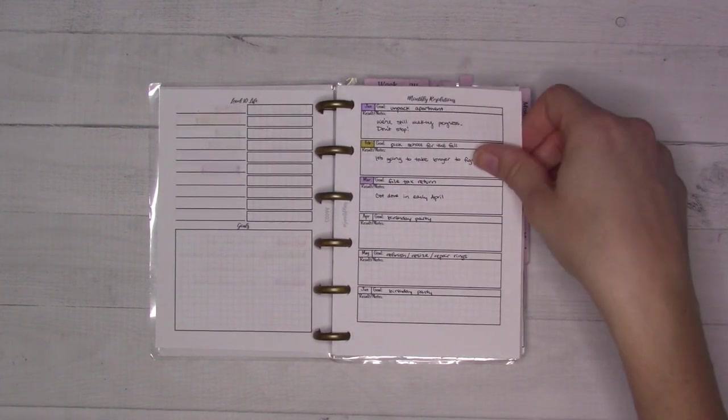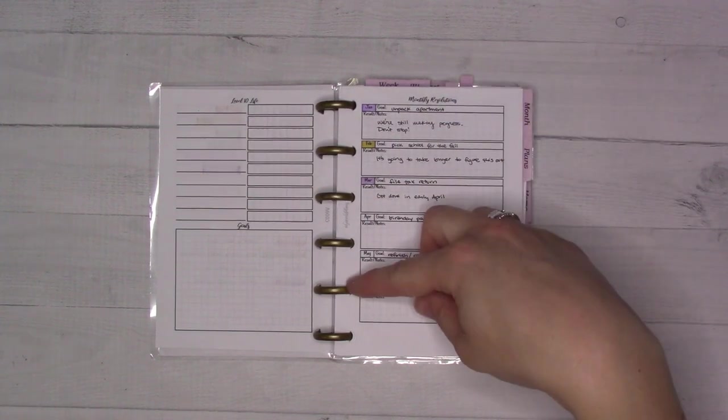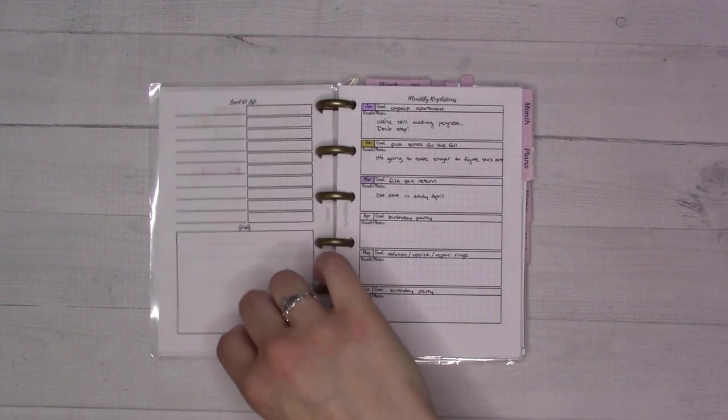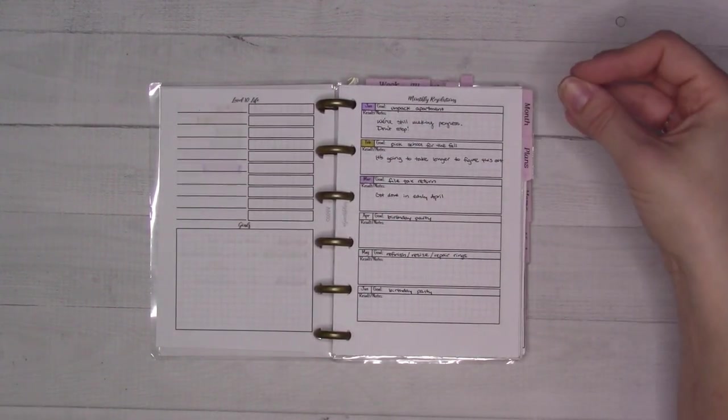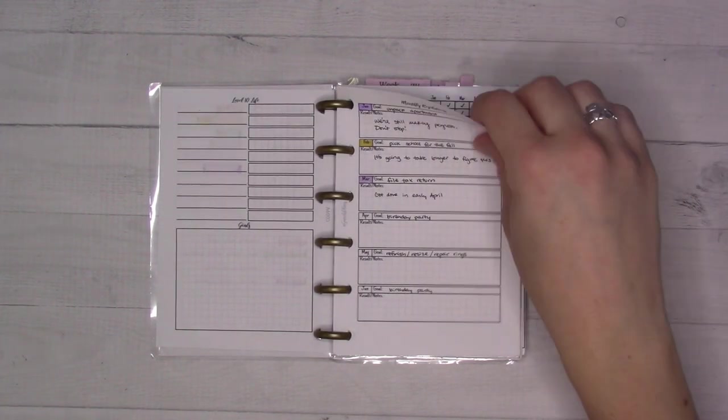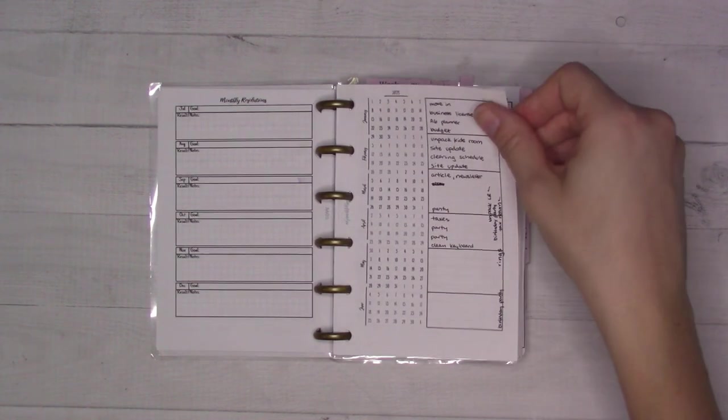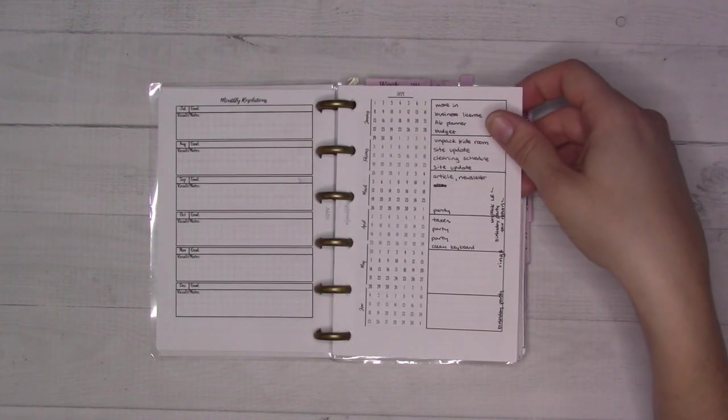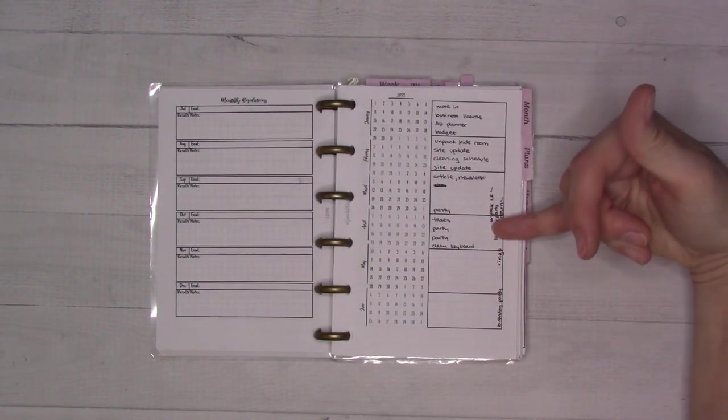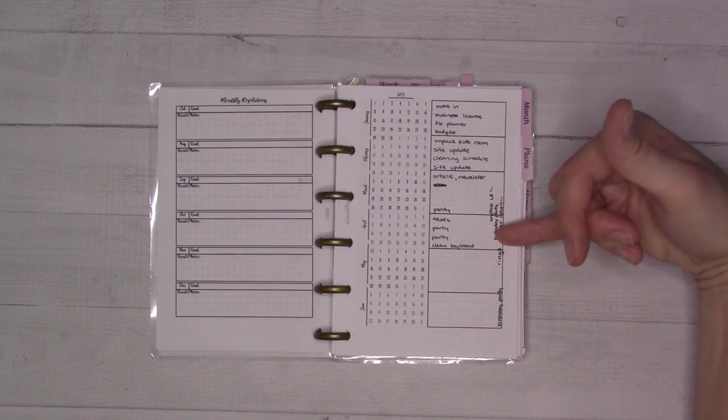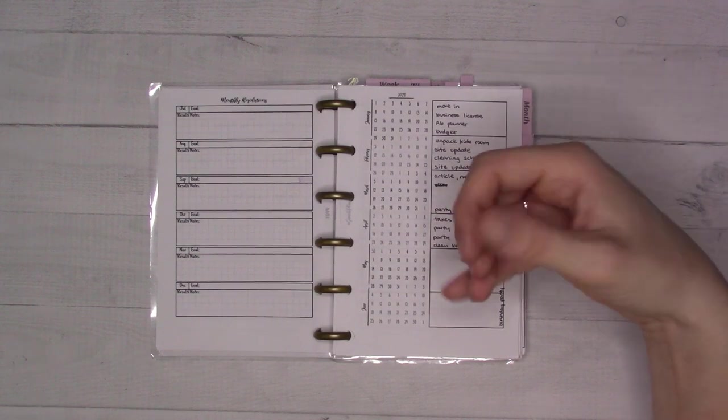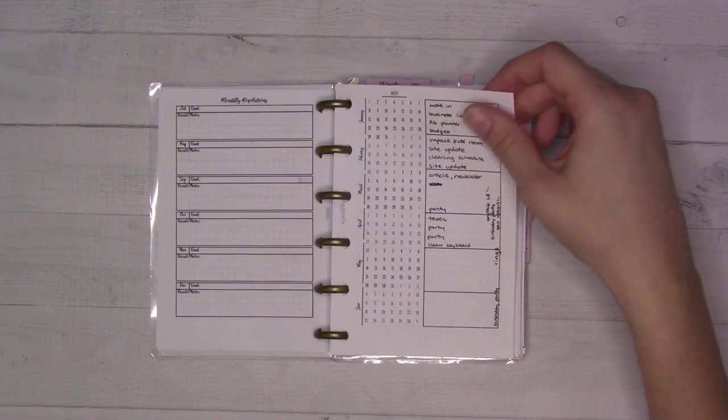This is my monthly resolutions. I never finished color-coding these, but anyway, these are supposed to relate to the colors for these categories. These are just a goal for each month, and mostly it was a project. So I had to unpack, I had a birthday party, taxes, that kind of thing. Then this here, 52 weeks future log, I find really useful for setting a goal for a specific week. You can see there's certain things that needed to happen by a certain time, like that birthday party had to happen by then. That helped me keep track of what was coming up, and then I assigned a main goal for the week, or a project to work on.